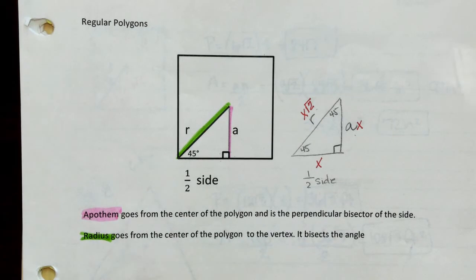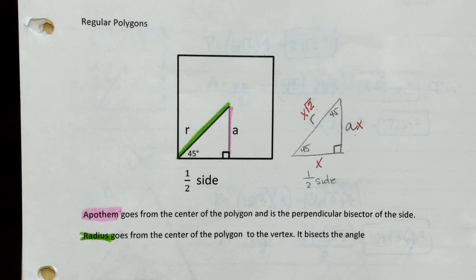Today we're going to talk about regular polygons. On the formula chart that was given to you in the first lesson, we discussed regular polygons — to find the area you would take one half times the apothem times the perimeter.